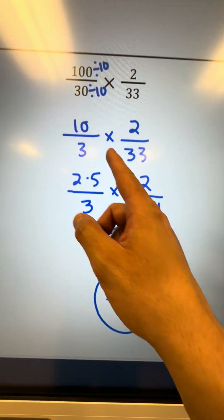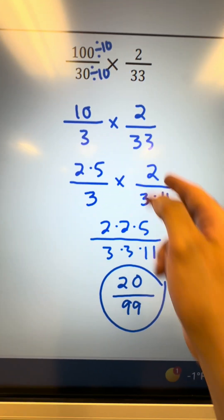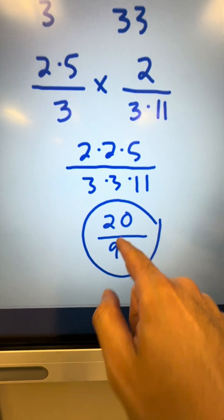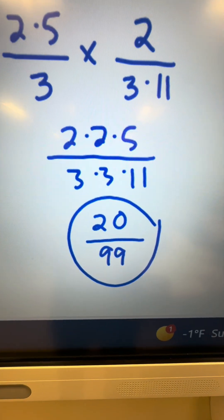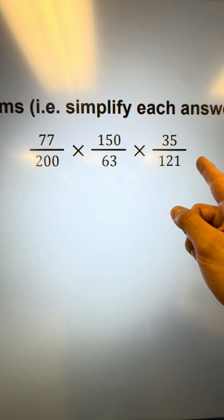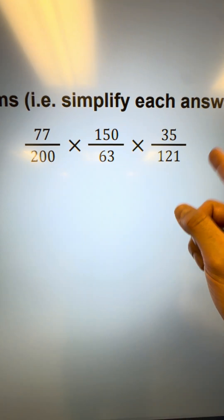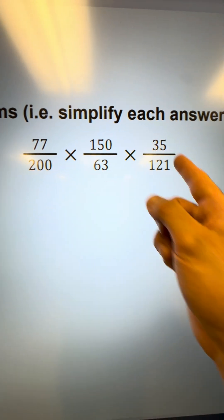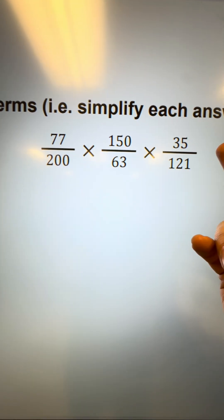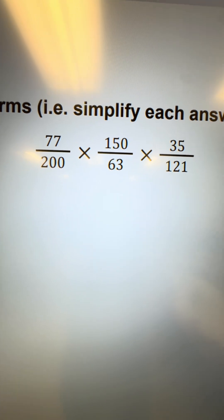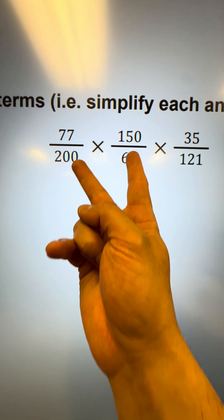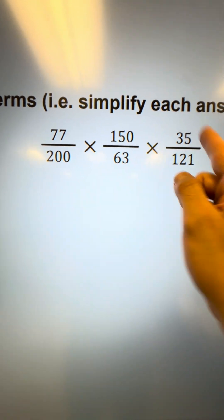Remember, because we went through the process of eliminating common factors, you know for a fact that this is in simplified form. Here is my next example — notice that we're multiplying three fractions together and the numbers are much, much bigger. But don't panic, because it's going to be the same exact process; you just have to do the prime factorization for not only two fractions but for three.